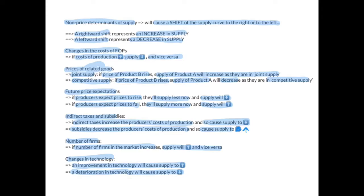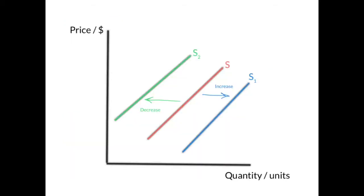This sums up all the non-price determinants of supply, which cause the supply curve to shift to either the right or the left. A shift of the supply curve to the right — from S to S1 — represents an increase in supply. A shift to the left — from S to S2 — represents a decrease in supply.